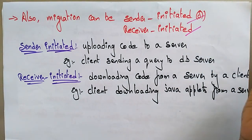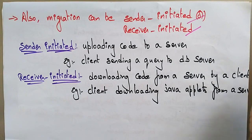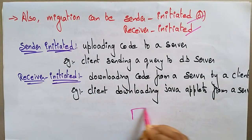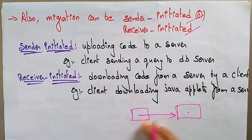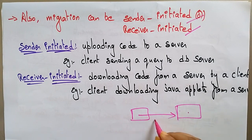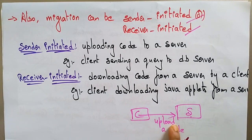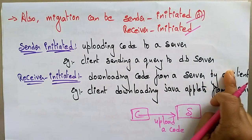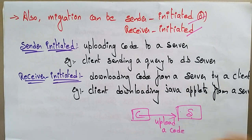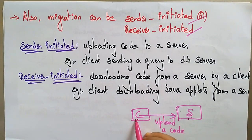So the different models are: strong migration, weak migration, sender-initiated, and receiver-initiated. Sender-initiated means the sender — the person who wants to send the data — uploads code to a server, from client to server. An example is a client sending a query to a database server: the sender, which is the client, initiates communication with the receiver, which is the server.